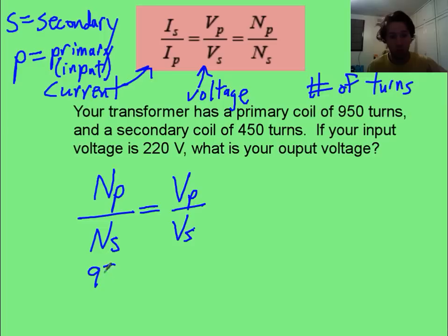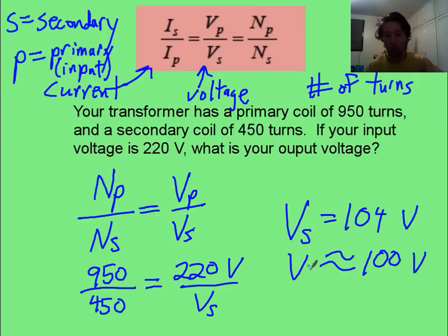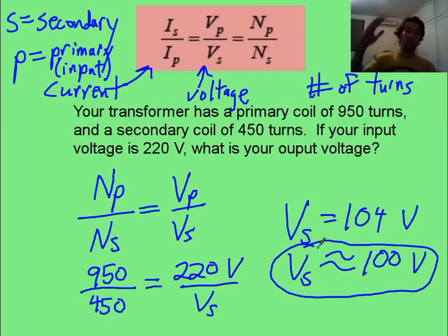The way you would fill in your numbers: you would put in 950 turns over 450 turns, equaling your primary or input voltage of 220, and then you solve for your secondary. Once you do the algebra, you should get something about 104 volts, and we're going to round that just to about 100. Maybe that's the type of transformer you want to use to step down if you're outside the US but you have a US appliance, and you can step it down to somewhere near 110.